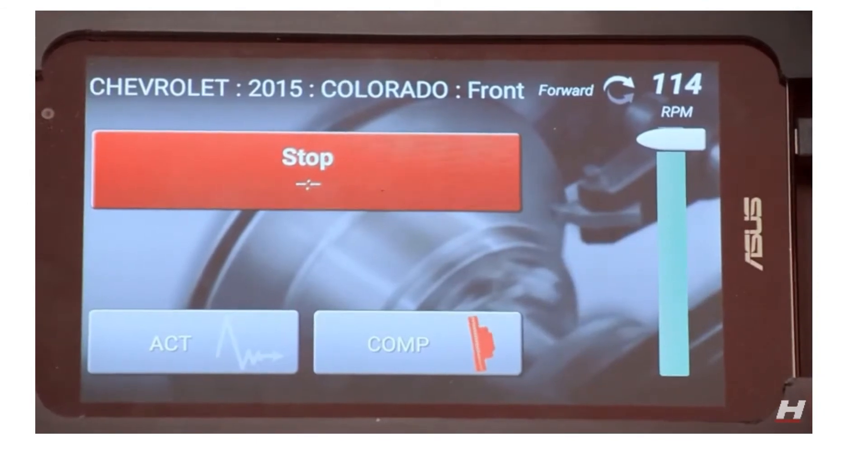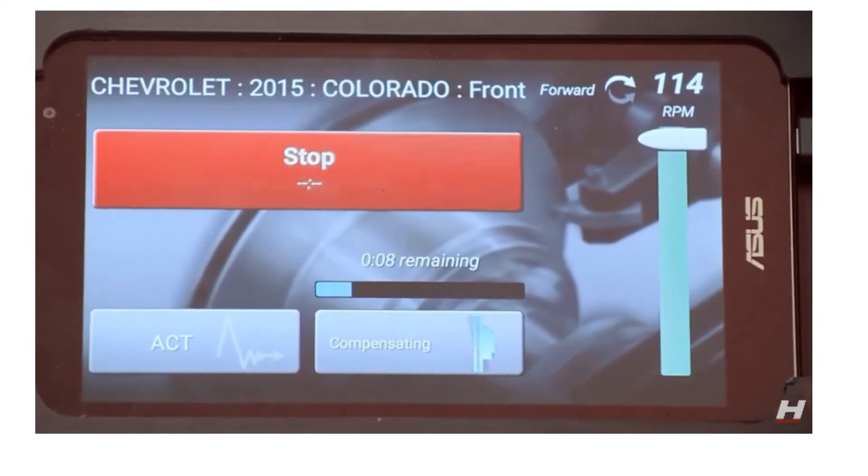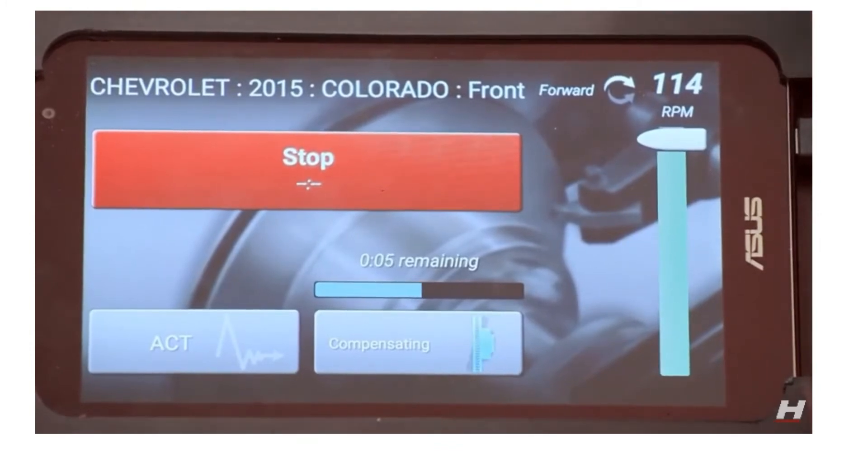As you can see here my comp button is red. It says it's got run out in it. So we go ahead and hit the compensation button. What it's going to do is do a quick calculation to see what it needs to do and it's going to drive the internal plates in there such that it compensates for that run out that existed.